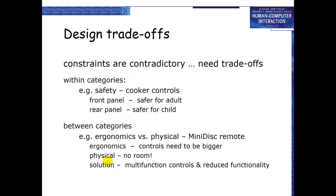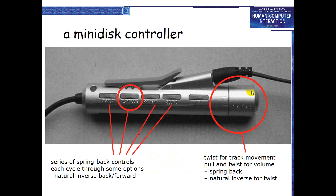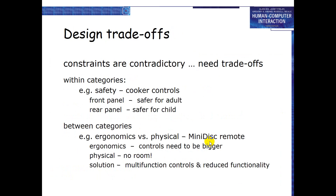For example, a knob on the mini disk: if you twist it, it controls track movement; if you pull it out and then twist it, it increases or decreases volume. So from one control we provide multiple functionalities — this is called a multi-function control and is the solution to the trade-off.